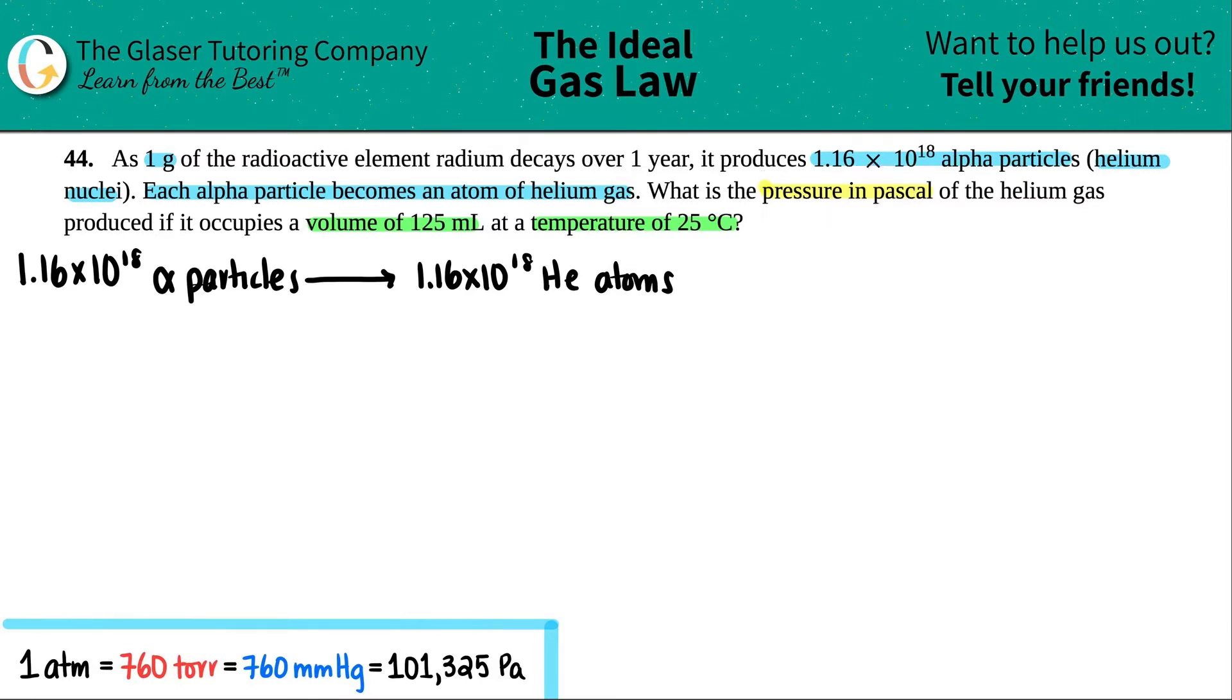Now they want to know what the pressure is in pascals. So I'm searching for a p-value, p equals question mark. And it's of that helium gas, which means that I only care about this. I don't care about the one gram of radium. And it produces a volume of 125 mils. So I have a volume of 125 mils and a temperature of 25 degrees Celsius.